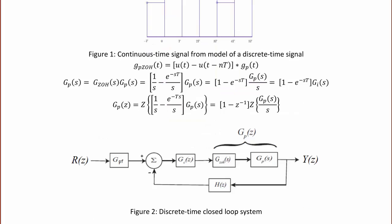Here is our discrete time closed-loop control system, where the input is R(z) and the output is Y(z). We have a pre-filter in the front, sometimes used to reduce steady-state error. Then it goes into the summer, where the other side is our discrete time controller GC(z), which feeds into a continuous time plant. We now have that continuous time plant multiplied by our zero-order hold in the S-domain, which we then find the Z-transform of to get GP(z), our output Y(z), and our sensor or feedback H(z).